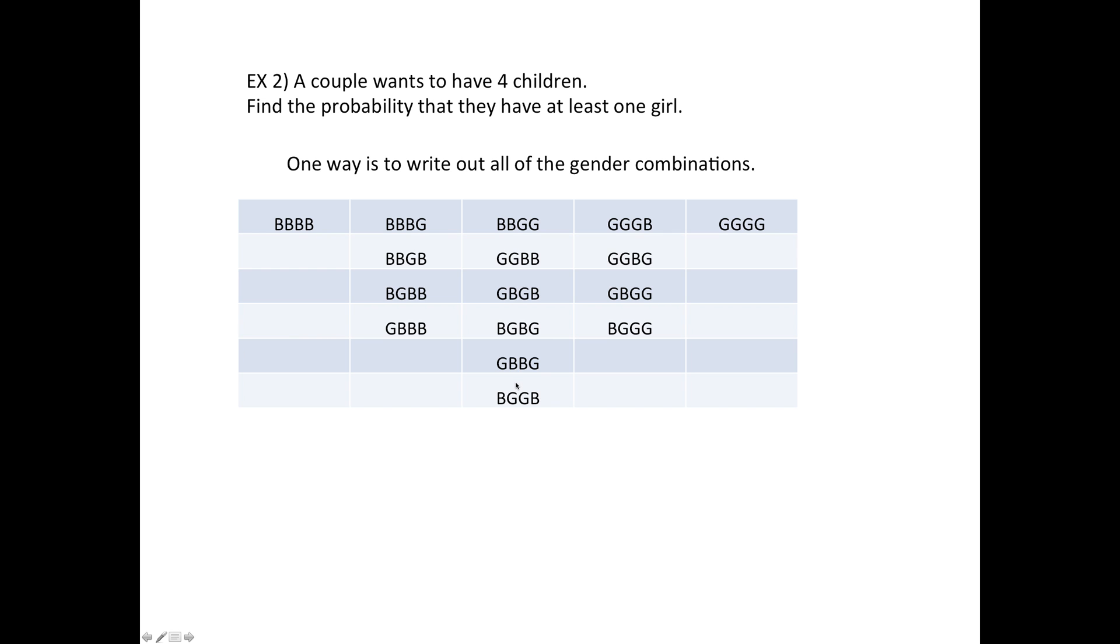And then in here you have to be sure you get all of the combinations where there's two boys and two girls—there's six there, etc. Then the question is asking what's the chance they have at least one girl? Well, all of these are the cases where they have at least one girl. So that's 15 out of the 16 cases, so the answer is 15 out of 16, 15 divided by 16.